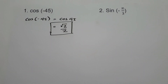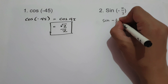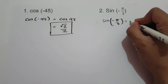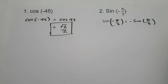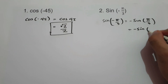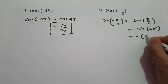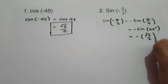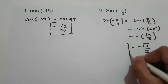What about number 2? We have sine(-π/3). Sine is an odd function. Therefore, sine(-π/3) = -sine(π/3). And we know that π/3 is 60 degrees, and sine(60°) = √3/2. But since we have a negative sine, that is -√3/2. And this will be our answer.